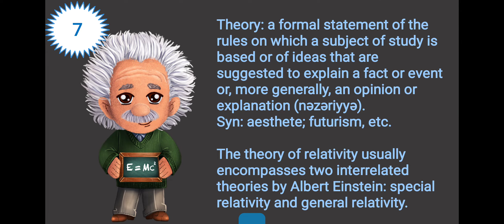Word seven: theory. Theory is a formal statement of the rules on which a subject of study is based, or ideas suggested to explain a fact or event, or more generally an opinion or explanation. For example: the theory of relativity usually encompasses two interrelated theories by Albert Einstein — special relativity and general relativity.